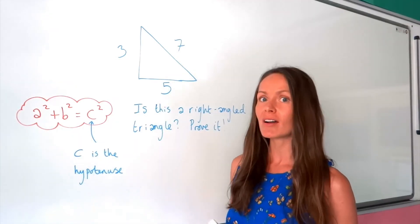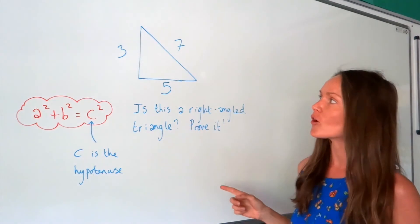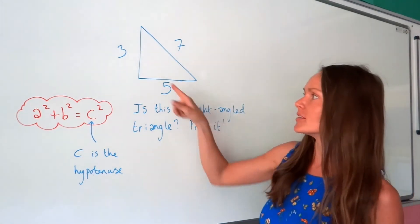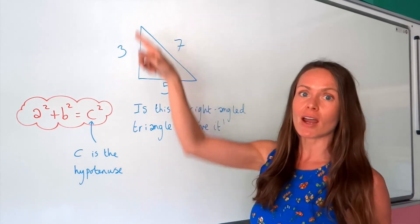Okay, so in this last challenge question, we're asked to prove whether or not this is a right-angled triangle. So we don't know that this is a right-angle because the diagram is not to scale.